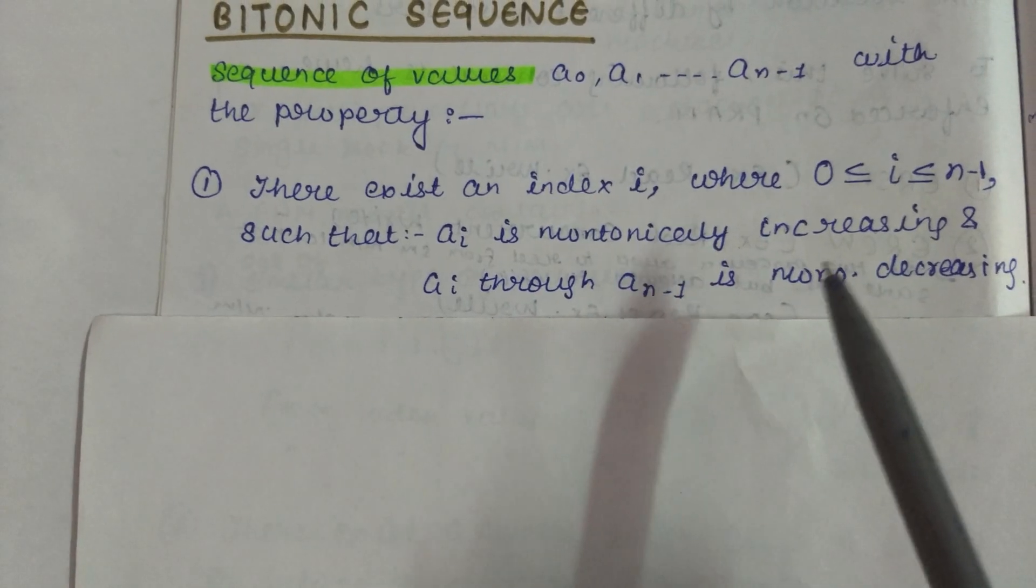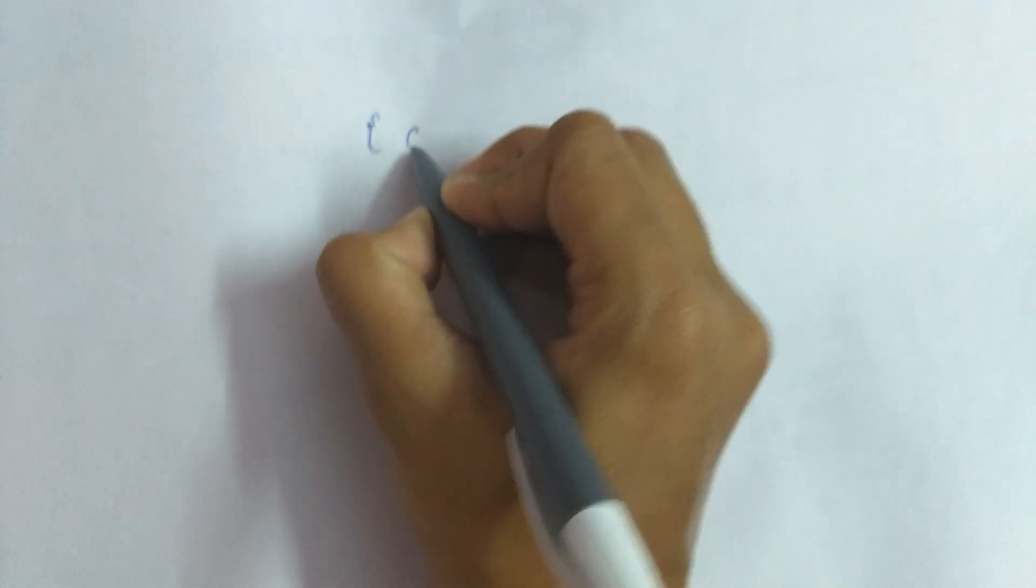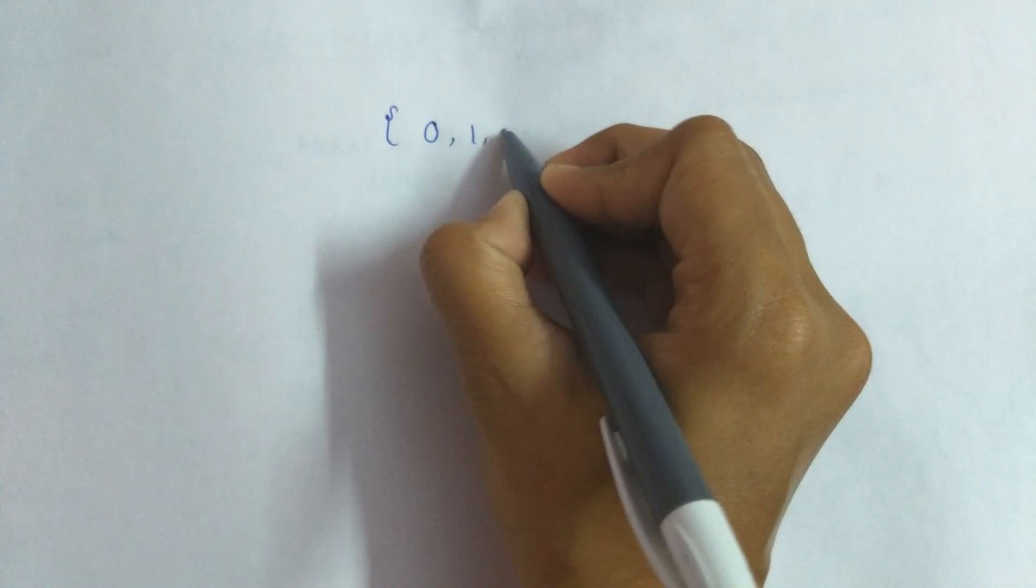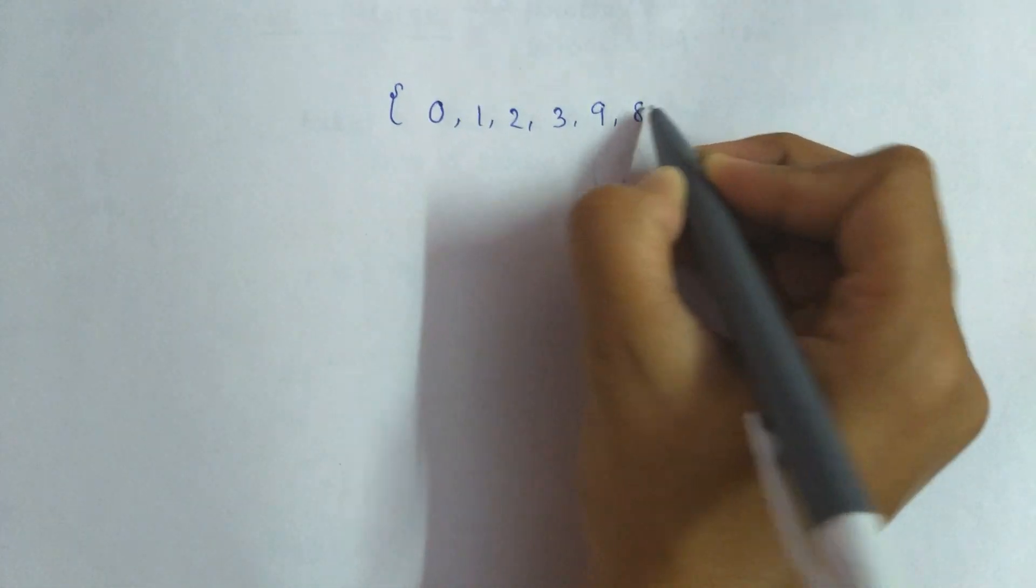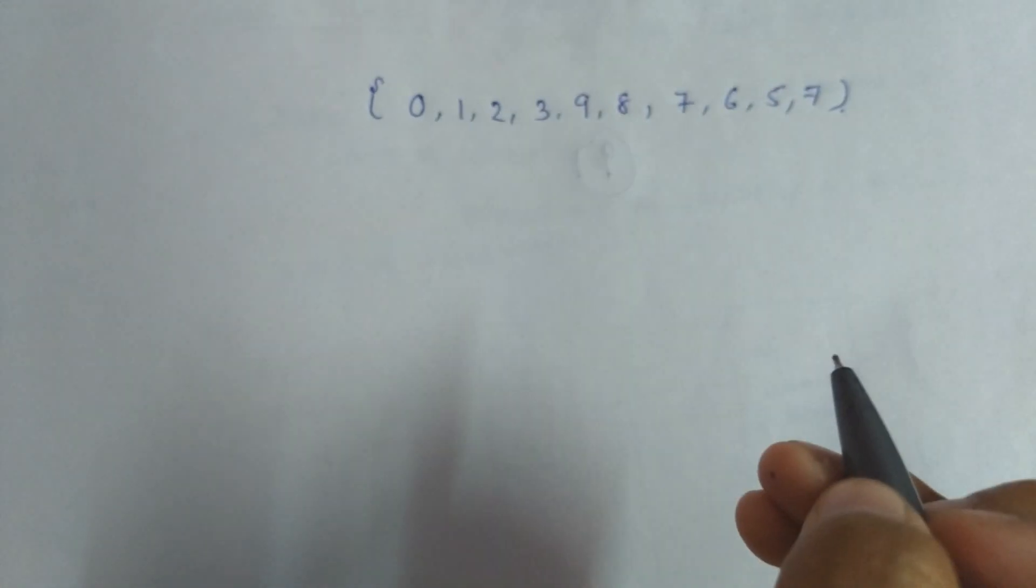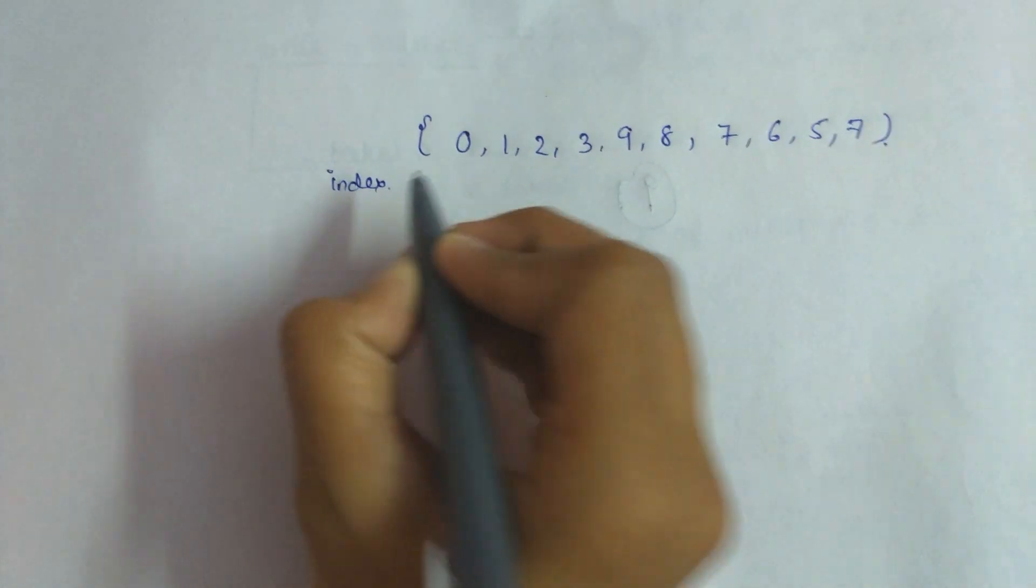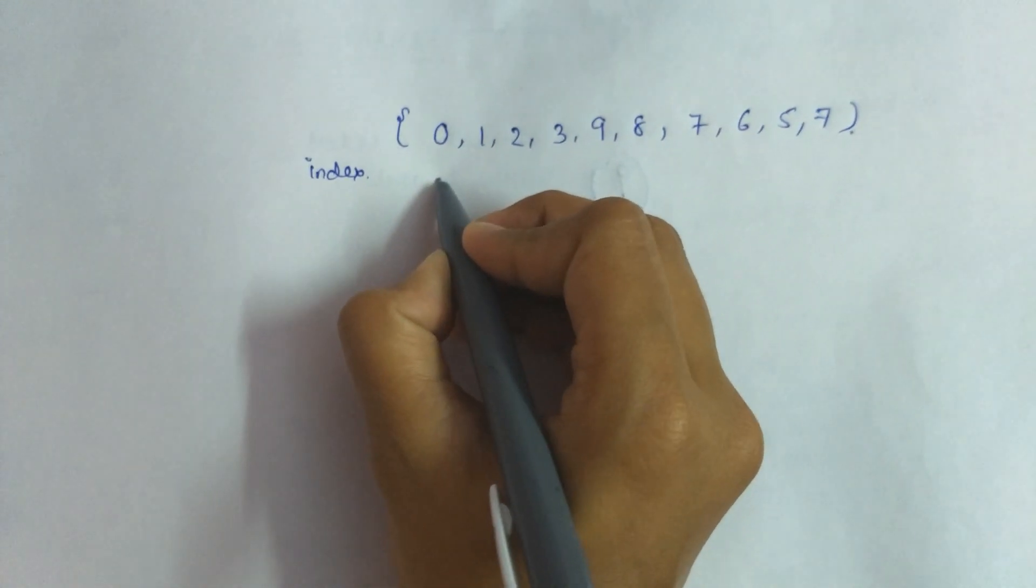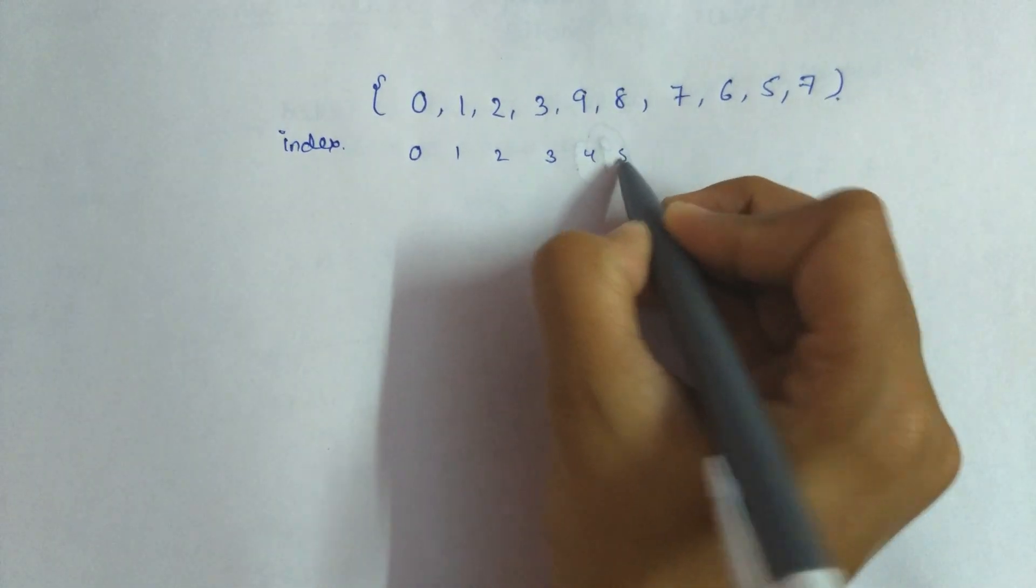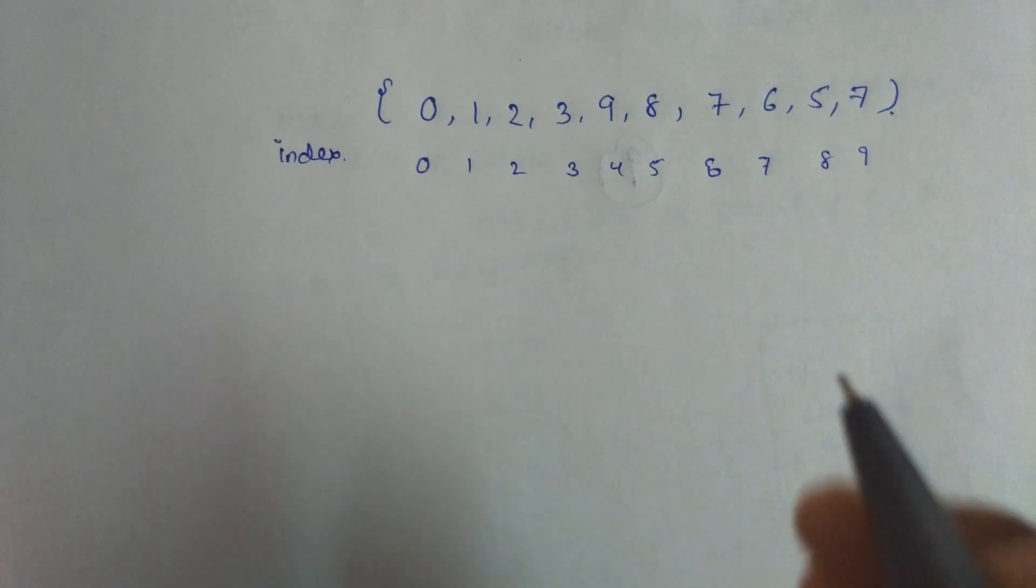So let us understand this property in detail. If we have, let us assume an example - this series of numbers. Let's take its index value. We will start from 0, so as you can see...